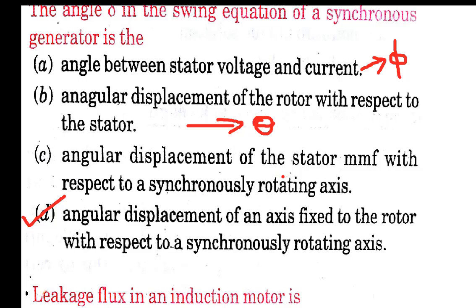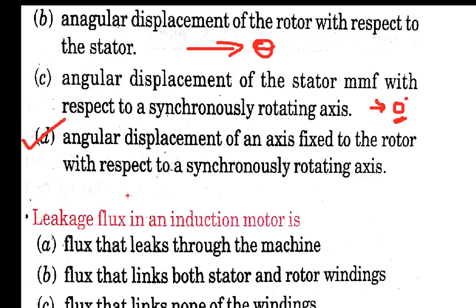Option C is the angular displacement of stator MMF with respect to synchronously rotating axis. This displacement is always zero, so there is no significance to this option.